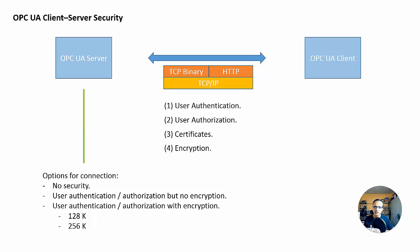That's network security. In the next video, part five, I will actually use something called UA Expert and a UA server and do actual connections, so you can see what the endpoint URL and the network security stuff looks like. Okay, that's it for now.